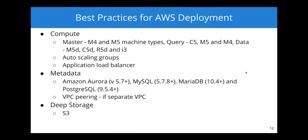We talked about metadata and deep storage as external dependencies. For deploying Druid on AWS, there are multiple metadata options: MySQL, MariaDB, PostgreSQL, and Amazon Aurora. Make sure you use version 5.7 plus for MySQL compatibility, and 9.5.4 plus for PostgreSQL. If your database is in a separate VPC, make sure you set up the appropriate VPC peering to allow the virtual machines inside your Druid VPC to talk to the metadata database.